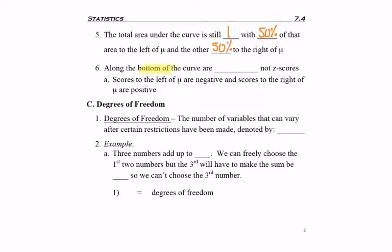Along the bottom of the curve, instead of listing z-scores, we list t-scores. And again, if we're letting mu be our center and it's zero, then anything to the left of mu would be a negative t-score, and anything to the right of mu would be a positive t-score. And something else you're going to notice on the table that you haven't seen yet is along the left side, we're going to see what's called degrees of freedom.